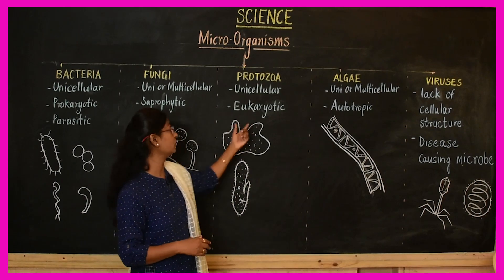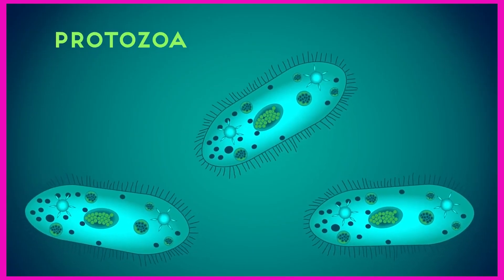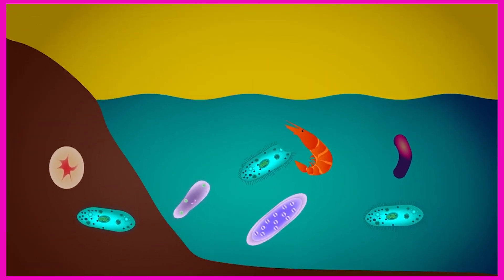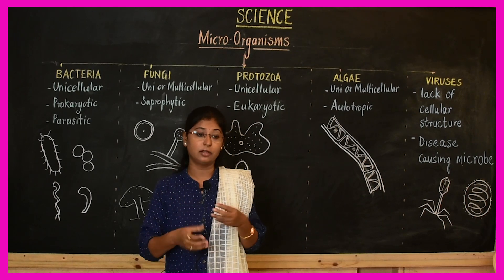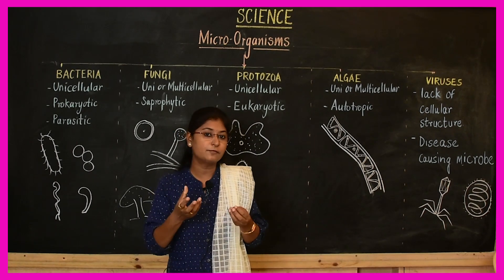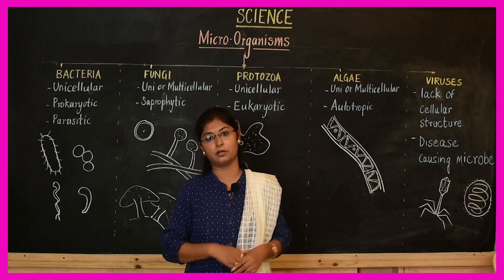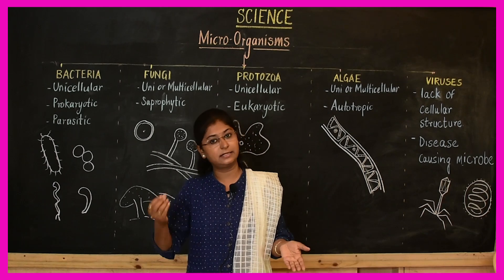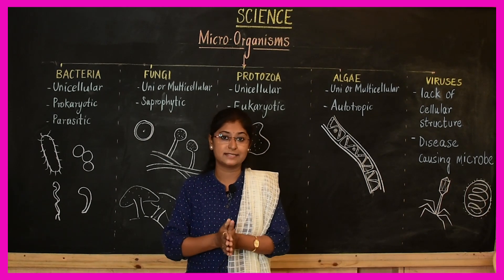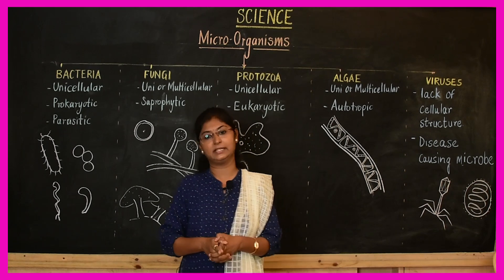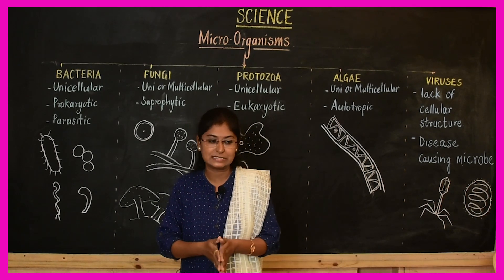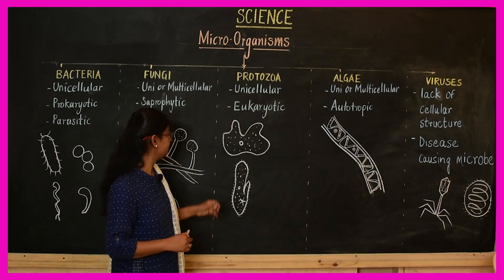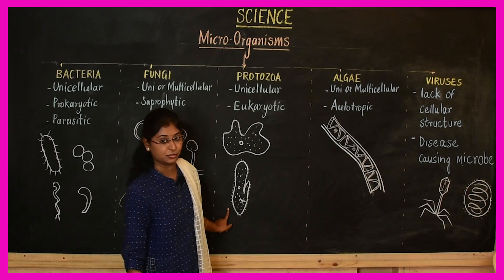The next kind is protozoa. Protozoas are unicellular microorganisms. They normally feed on other microorganisms or are found in the body of other microorganisms. Protozoas are also found in soil and in water. They are responsible for causing many diseases like malaria, dysentery, and many more. Examples of protozoas are amoeba and paramecium.